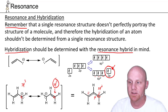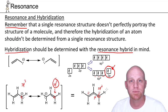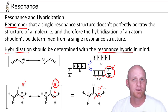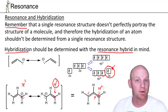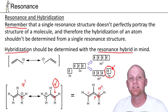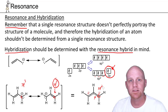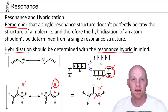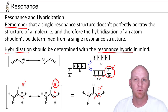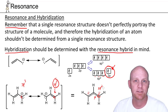So in this case, it must be sp2 hybridized, and therefore would have an unhybridized p orbital and can participate in pi bonding. The moral of the story is: if you've got a couple different resonance structures and in one an atom is sp3 hybridized and in another it's sp2 hybridized, it's really sp2 hybridized. If you're participating in resonance whatsoever, you cannot be sp3 hybridized.